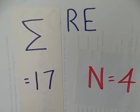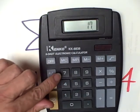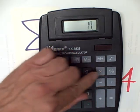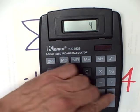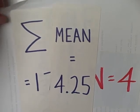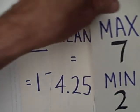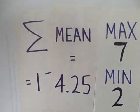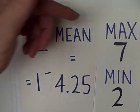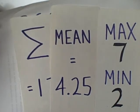We're now ready to do the calculation. 17, which is our sum of the scores, divided by our sample size of 4 equals 4.25. 4.25 is the arithmetic mean of this data set. Now before we go any further, let's do that error check. Look at the minimum, look at the maximum. Yes, the mean is between the minimum and the maximum.